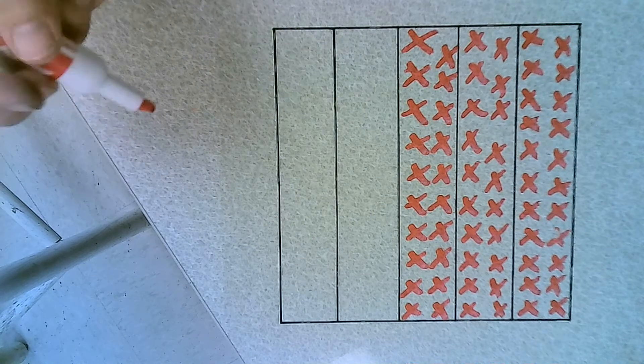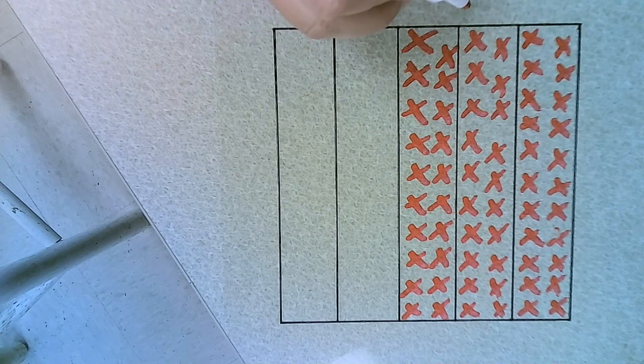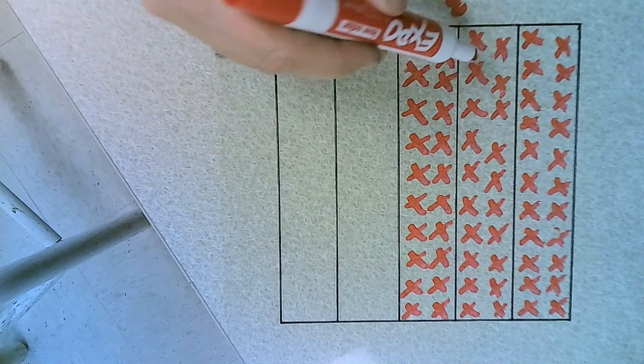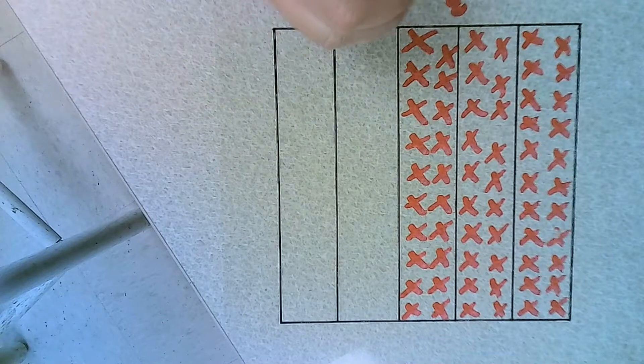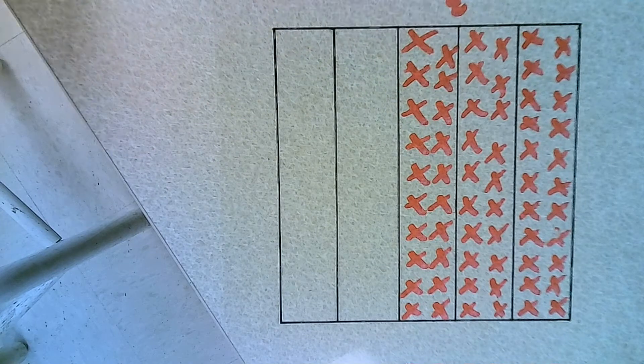First thing you have to do is recognize that this is 1, 2, 3 out of 1, 2, 3, 4, 5. So this is 3 fifths.